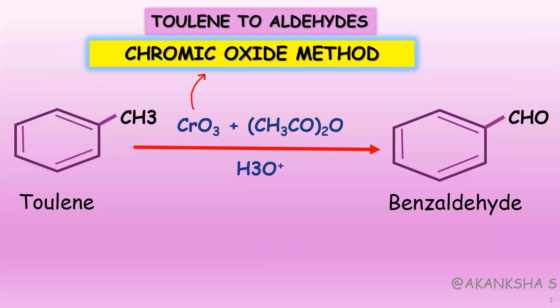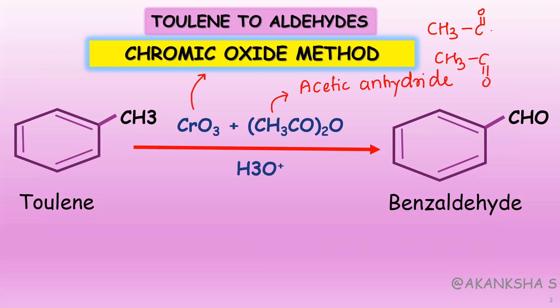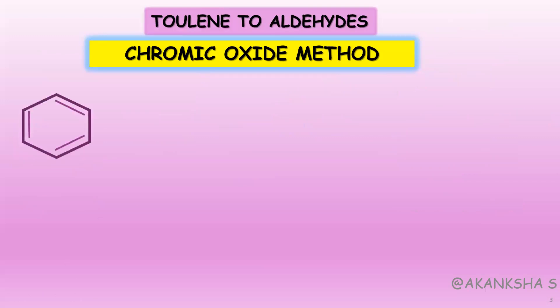Acetic anhydride looks like: CH3–C(=O)–O–C(=O)–CH3 — two carbonyl carbons joined with a single oxygen. Using both chromic oxide and acetic anhydride, we are going to convert toluene to benzaldehyde. This is not a one-step process; we require two steps.